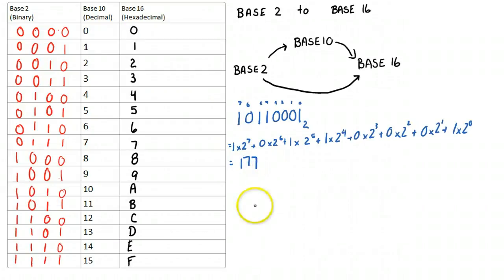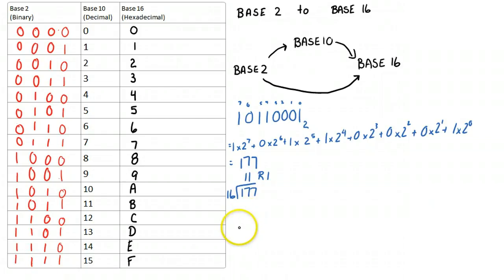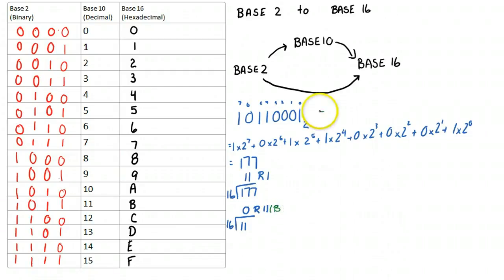So then I can go through my process, and I can say 177 divided by 16. That's going to give me 11 remainder 1. And then I can take 11 divided by 16, which is going to give me 0 remainder 11. But remember, this is hexadecimal, so I can jump over to my chart and see 11 is B. So therefore, this in base 16 is going to be B1.